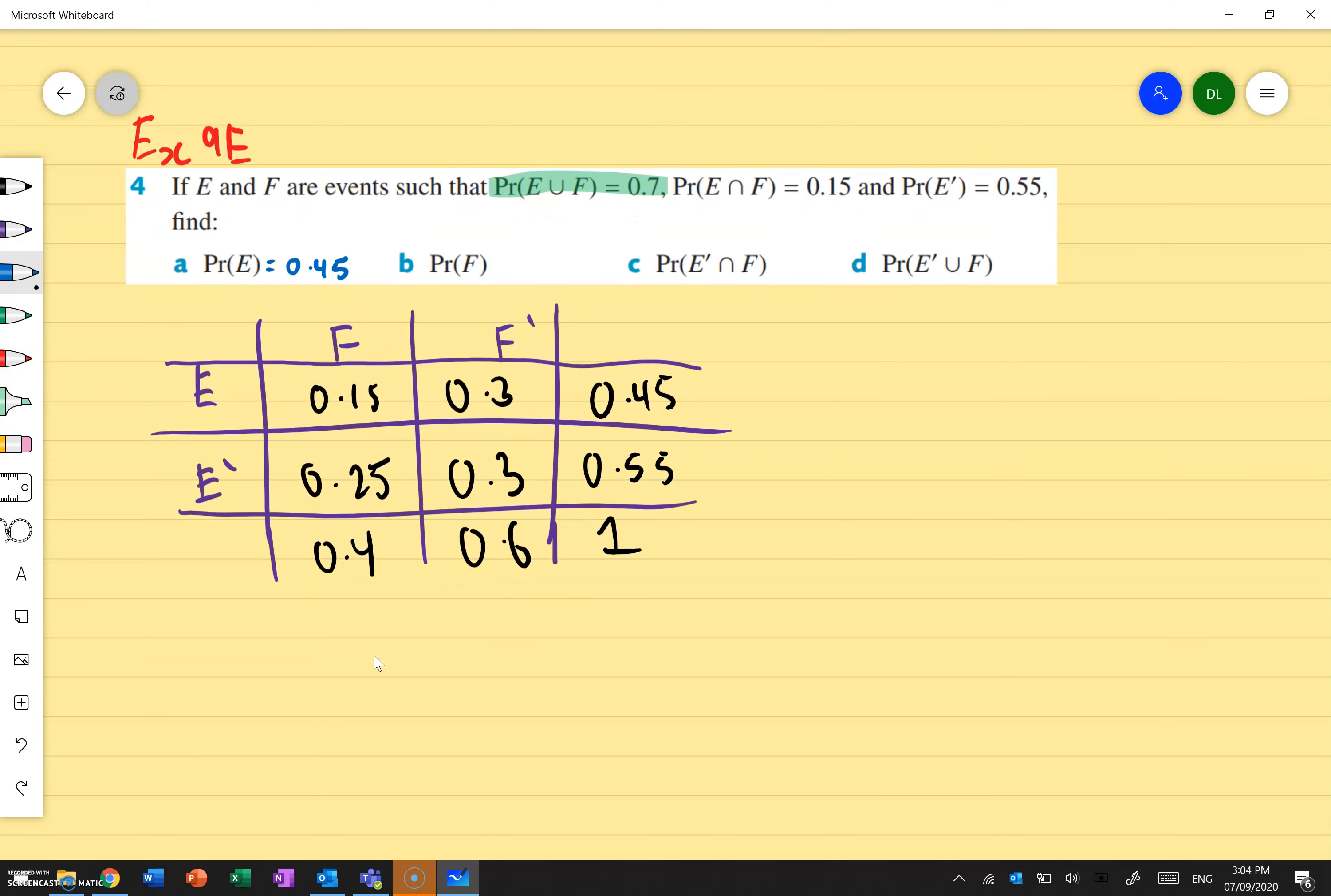The probability of F is just what's the total of F. So F is this one over here, the column. So I'm working with the column. So let's look at the total of the column, which is 0.4. So the answer is 0.4.